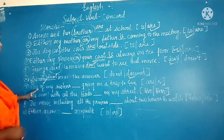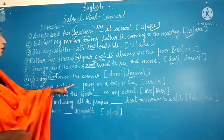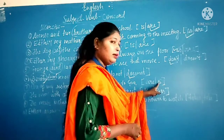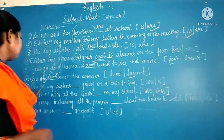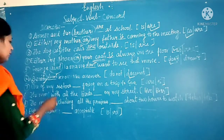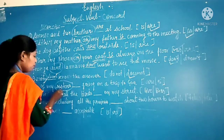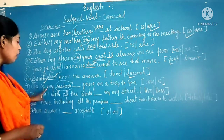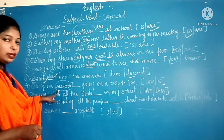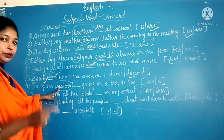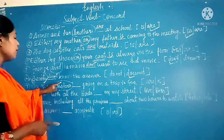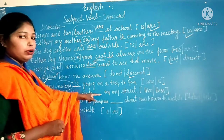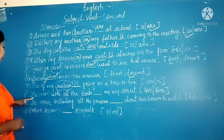Next: 'One of my sisters ___ going on a trip to Goa.' The options are 'are' and 'is.' Although 'sisters' is plural, we go according to the phrase 'one of my sisters' — meaning I have many sisters but I am talking about one. So 'is' is correct. One of my sisters is going on a trip.